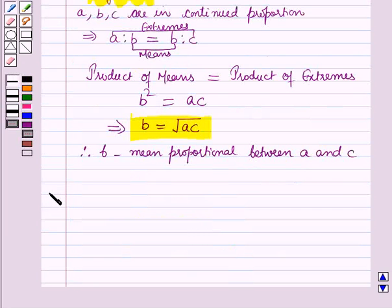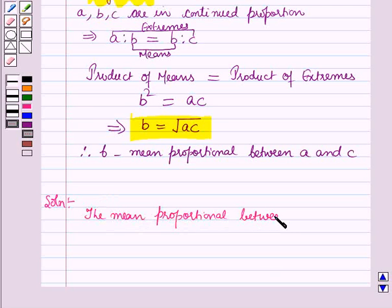Now let me start with the solution. The mean proportional between 18 and 8, according to the formula which is given in the key idea, is equal to square root of 18 into 8.